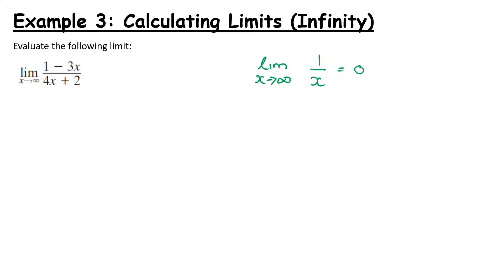So the limit as x goes to infinity of 1 over x equals 0. It doesn't matter what number I put in — for example, k over x will still go to 0, because no matter what k is, as x gets really, really big that fraction will get smaller and smaller until it reaches 0.